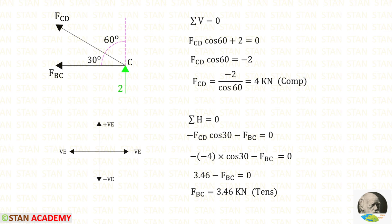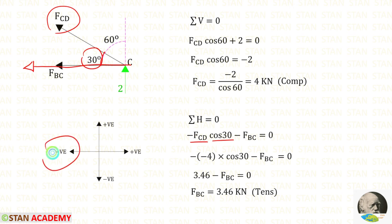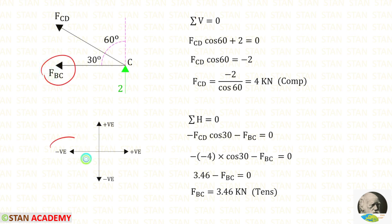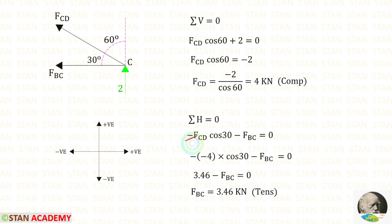Now let us apply sigma H equals 0. We have to make FCD horizontal using 30 degrees, so we multiply FCD with cos 30. When made horizontal it acts towards the left side, so it is negative. FBC is also acting towards the left side, so it is negative. FCD is 4 and it is compressive, so we apply it as negative. Negative into negative becomes positive. Finally for FBC we get a positive value, meaning it is tensile.